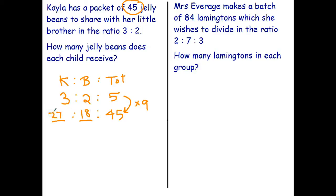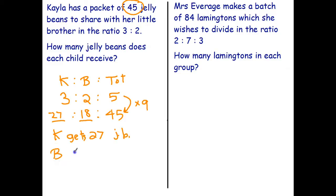Two times nine is 18, three times nine is 27. Therefore Kayla will get 27 of the 45 jelly beans and little brother only gets 18. Quick check: 27 plus 18 adds to 45, so it looks like we've done it correctly.